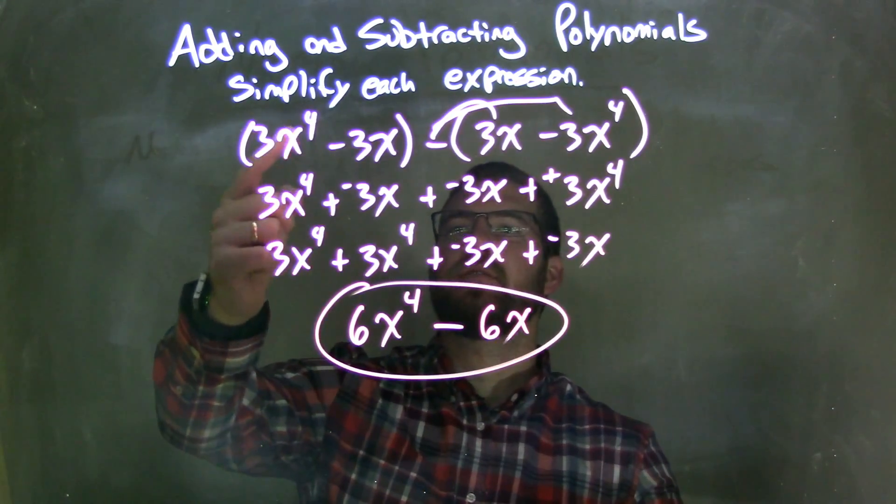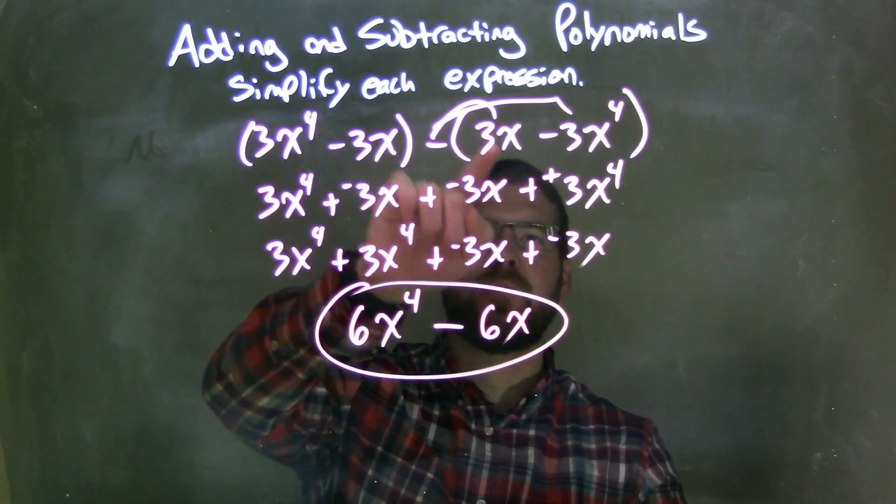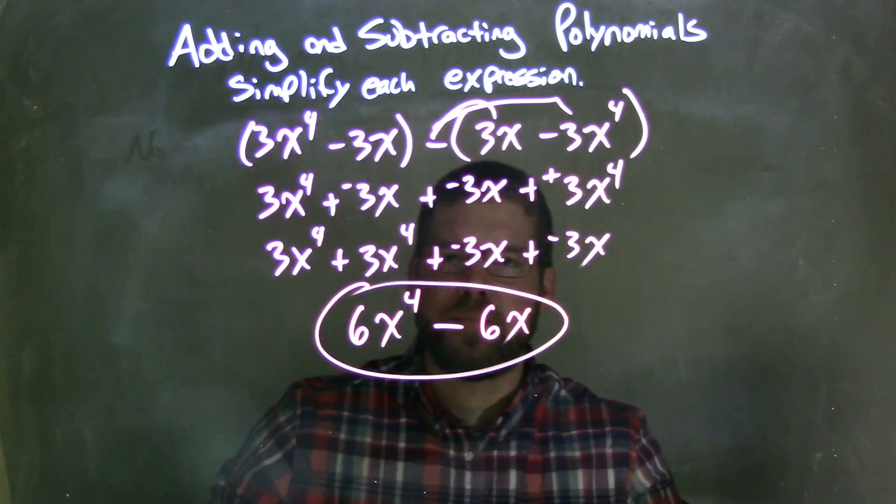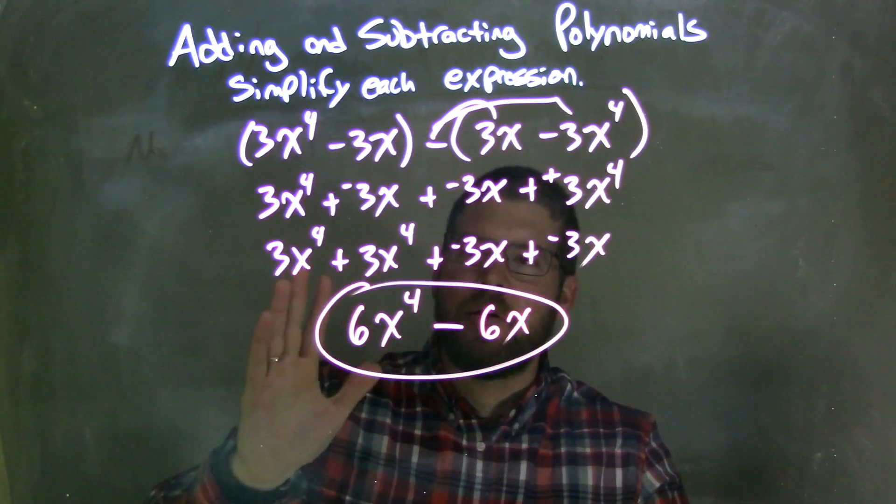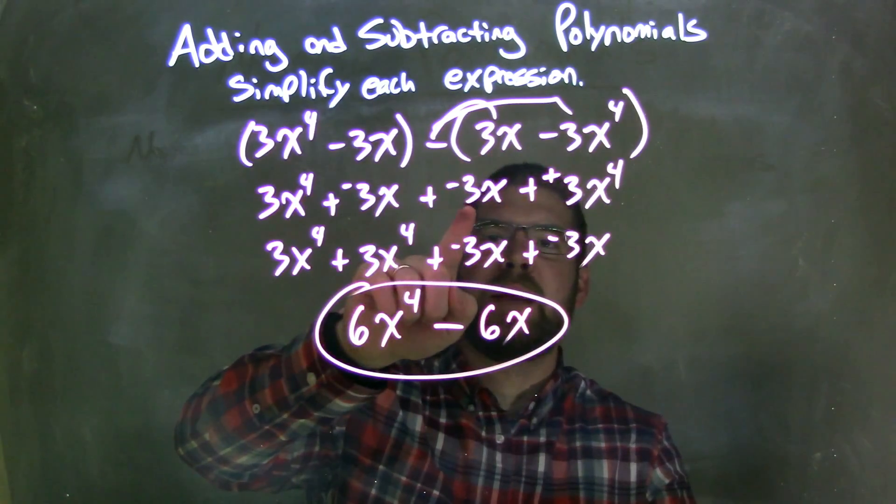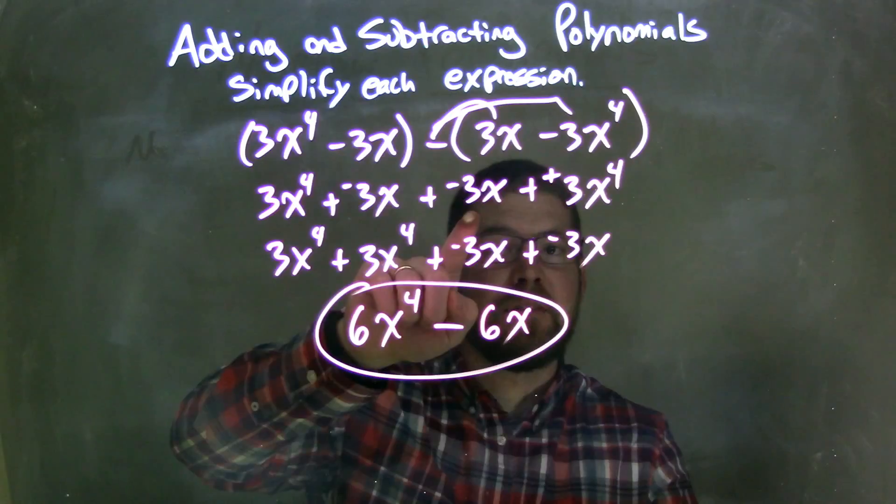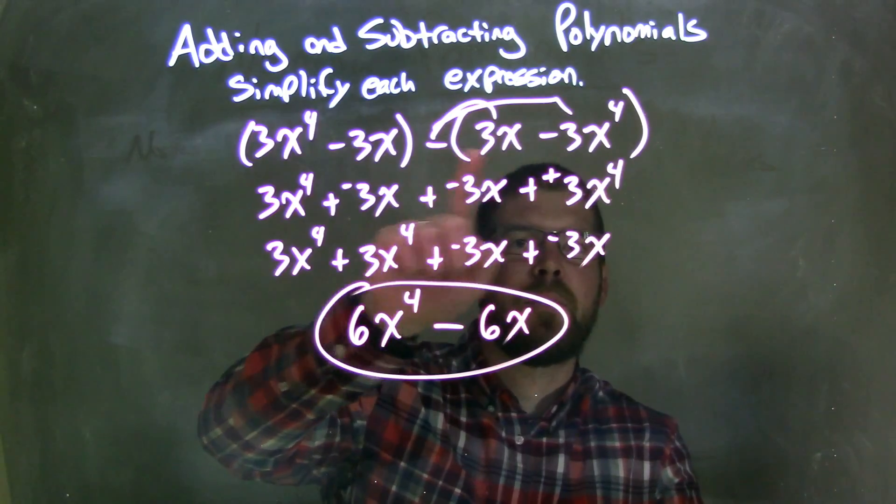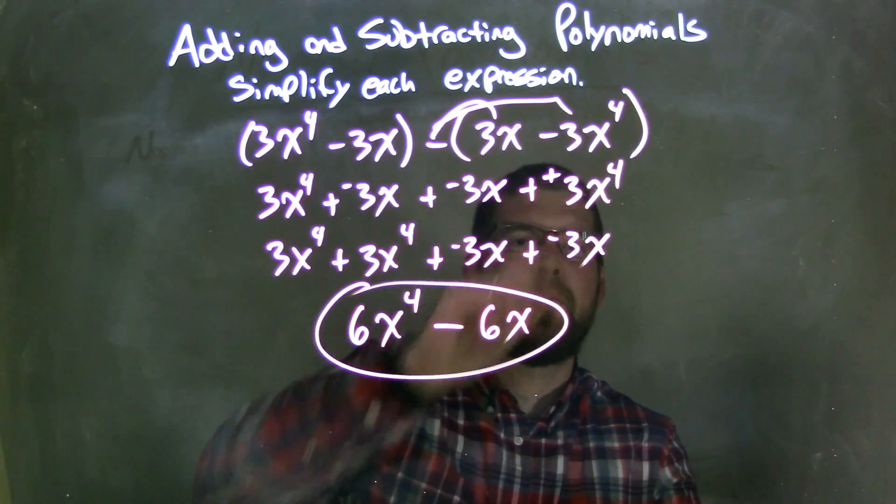So, let's recap. We're given 3x to the 4th minus 3x parentheses minus parentheses 3x minus 3x to the 4th. I like to make everything adding a negative. So, I make that adding a negative 3x right here. And distribute the minus sign here. It gives me adding a negative 3x. And then, adding a positive double negative.